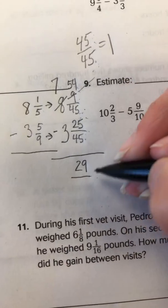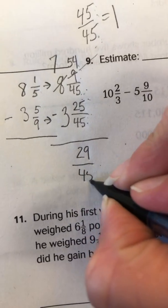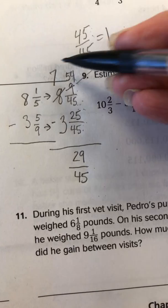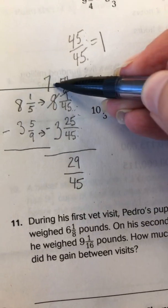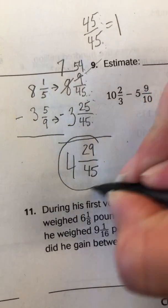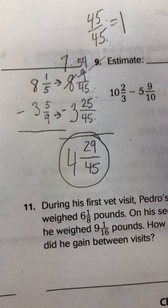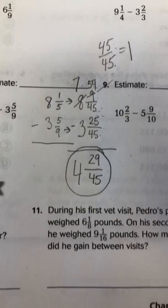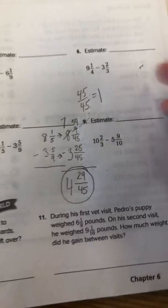The denominator, again, still stays the same. And now we can subtract our whole numbers. So 7 minus 3 is 4. So our final answer here is 4 and 29/45. All right. Let's go ahead and look at another one real quick.